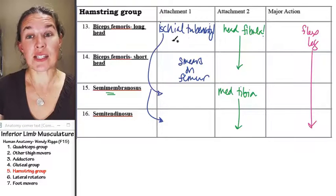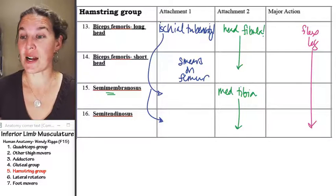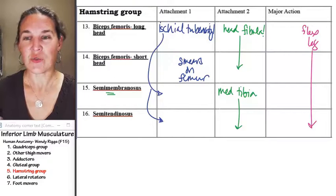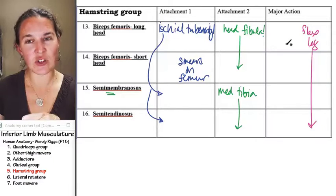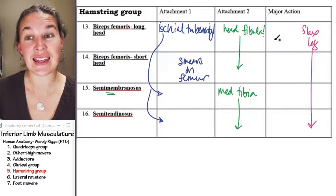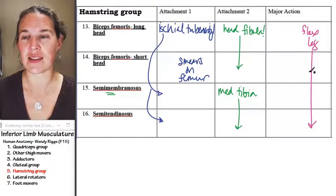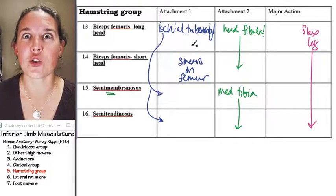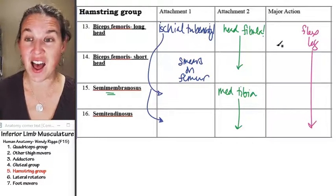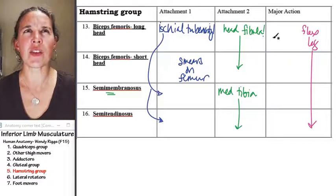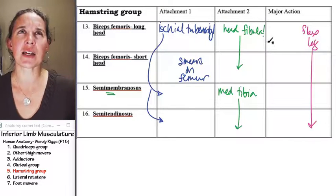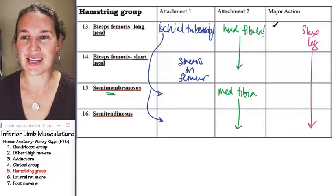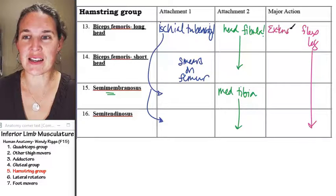Because most of these guys attach to the ischial tuberosity, what is their other action? You know that since they span the hip joint, they have to do something to the thigh. And you tell me, what are they going to do? They're on the posterior aspect. They're attached to ischial tuberosity. They're going to extend the thigh.